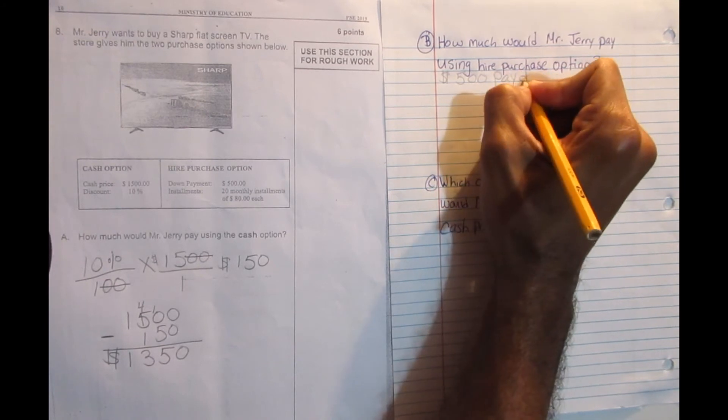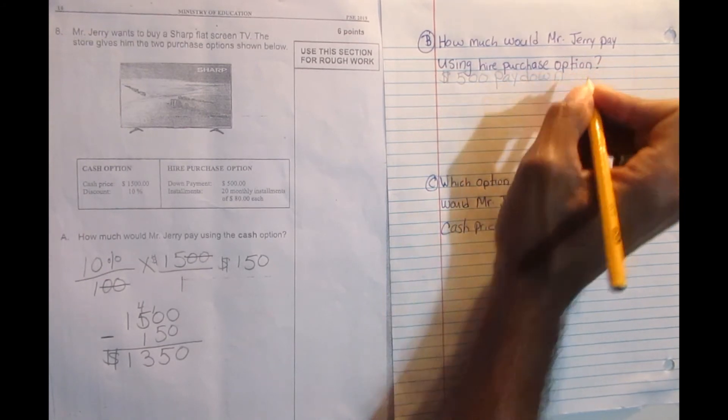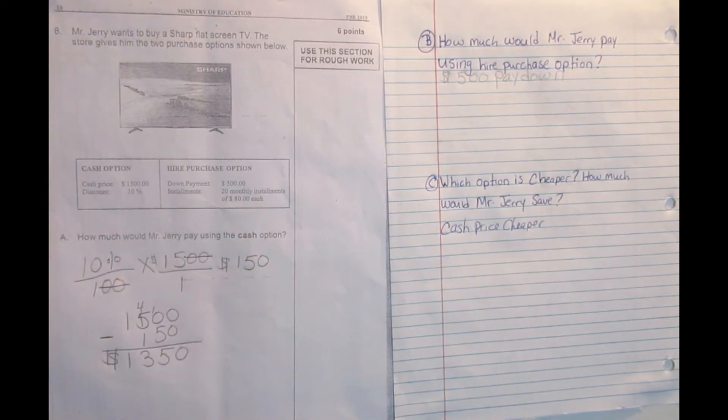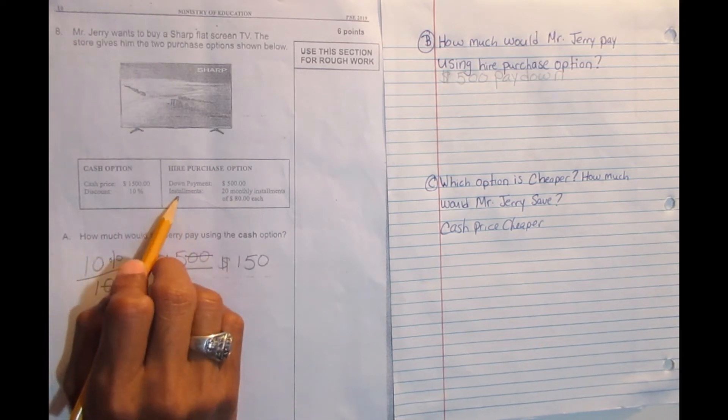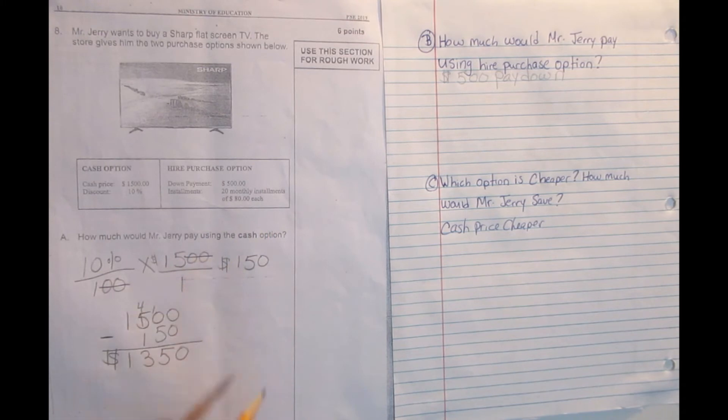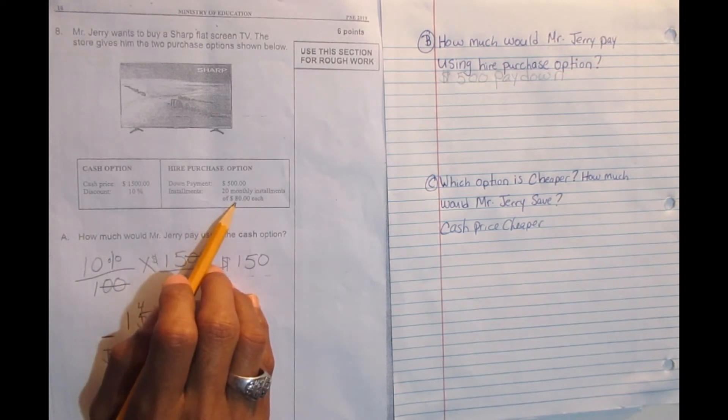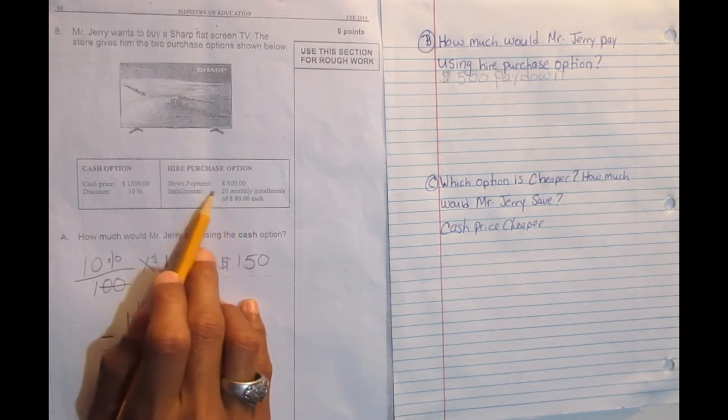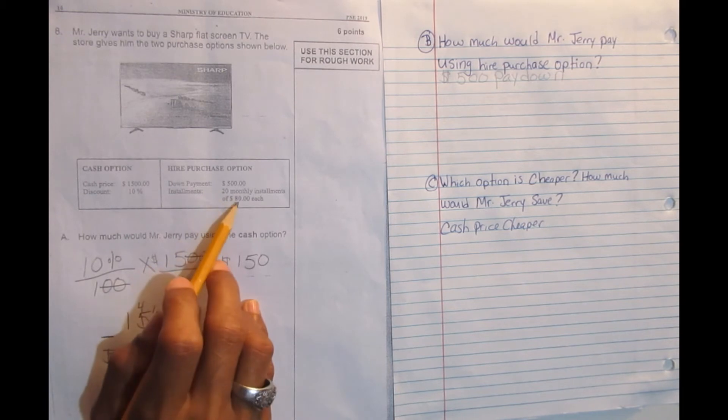Why? Because we have to add that later on. Because when I got the TV, I paid down $500. Then it's 20 monthly installments of $80. So you're going to pay $80 for 20 months, almost two years. So all we need to do is to find how much you're going to pay for that 20 months of $80.